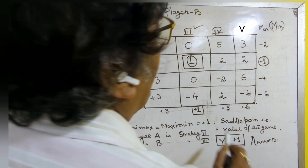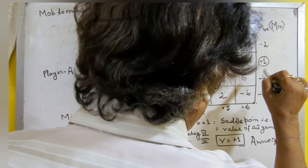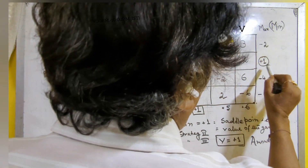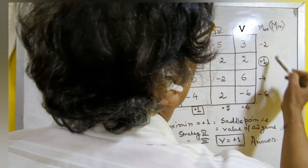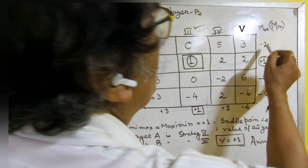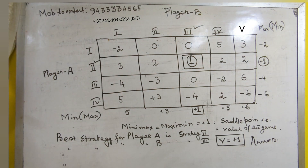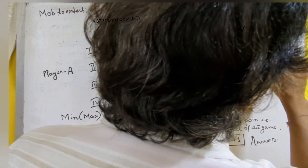In this way, for all rows you have to find the minimum values and put them to the right side of the corresponding rows. In this case: minus 2, plus 1, minus 4, minus 6. Now what is maximin? Maximin means out of all these minimum values, you have to find the maximum one. Out of minus 2, plus 1, minus 4, minus 6, the maximum one is plus 1. That means maximin is equal to plus 1.